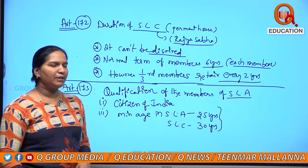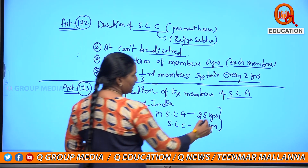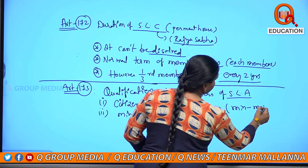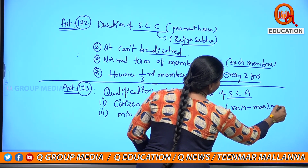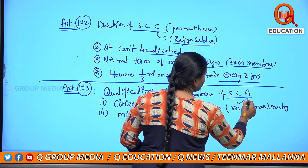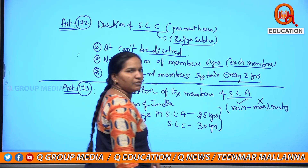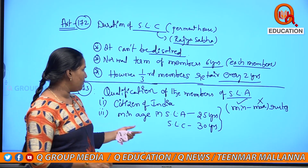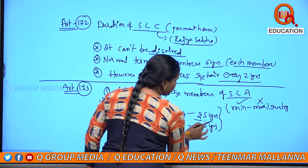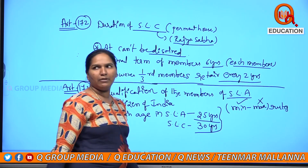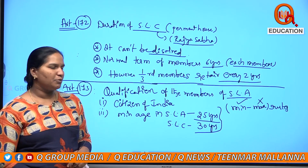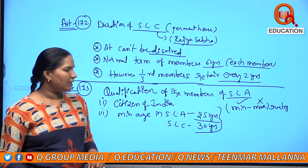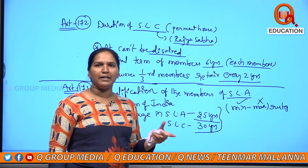Minimum age is mentioned; there is no maximum age. According to the Minimax rule, if they mention minimum age, there is no maximum age. So at 70 years, 80 years, even 100 years — there is no maximum age limit.